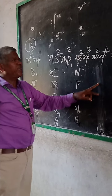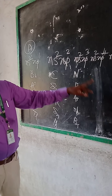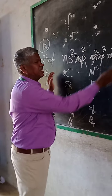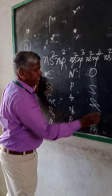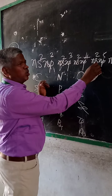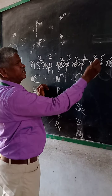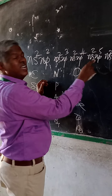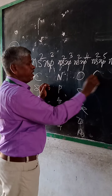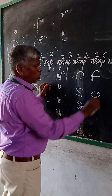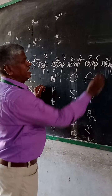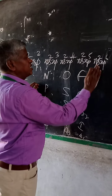Group 15 elements include Nitrogen, Phosphorus, Arsenic, Antimony, and Bismuth. Group 16 elements are Oxygen, Sulfur, Selenium, and Polonium. Group 17, the halogens, includes Fluorine, Chlorine, Bromine, Iodine, and Astatine.